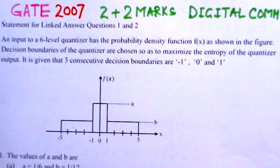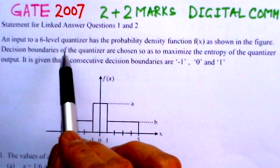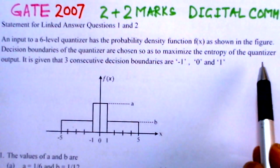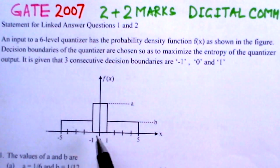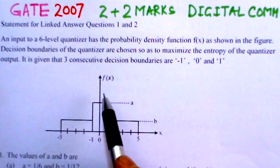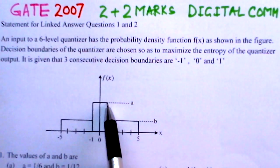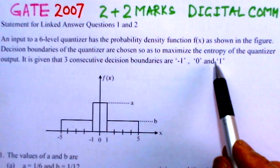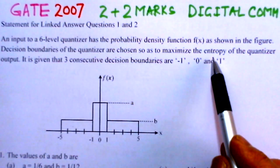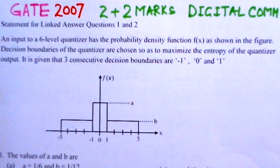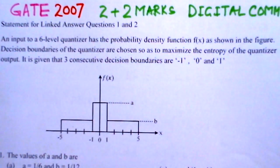Revisiting this problem: it is a six-level quantizer for which the probability density function is given. Decision boundaries indicated are minus one, zero, and one. To maximize the entropy, the output regions must be equiprobable — this is a very important point. That means the decision boundaries must be chosen so that each region is equiprobable.